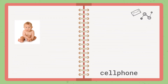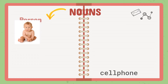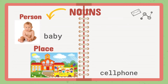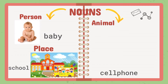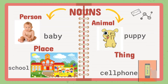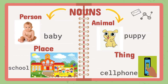What are the examples of a noun? For person, we have baby. For place, we have school. For animal, we have puppy. And for thing, we have cell phone.